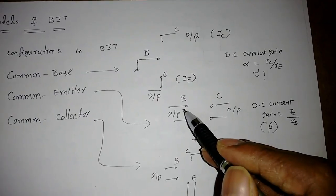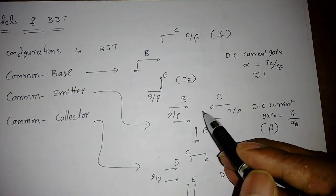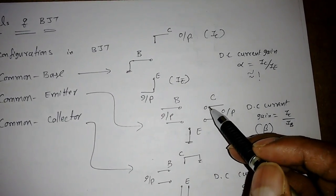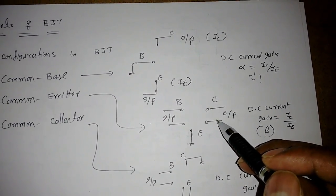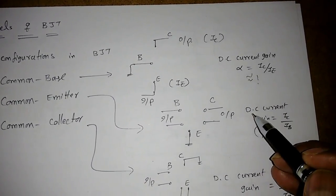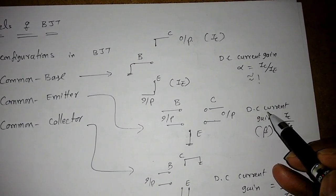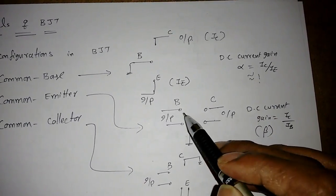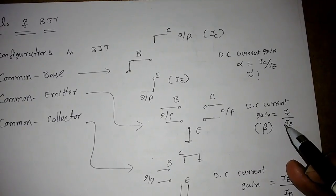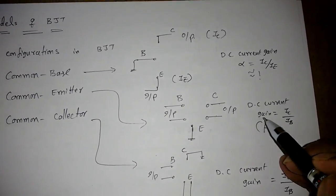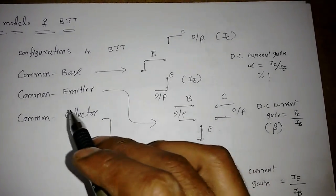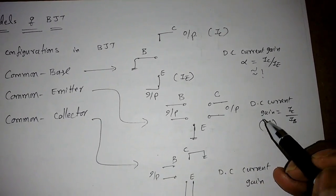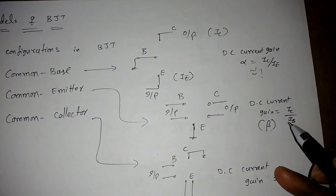In common emitter configuration, the emitter is common to both base and collector. We apply input at the base and take output at the collector. The DC current gain is output IC divided by input IB, and that is why beta is called the common emitter current gain — beta equals IC divided by IB.